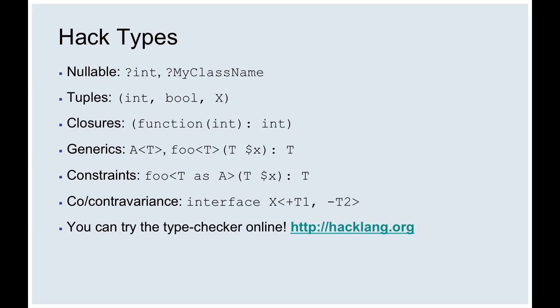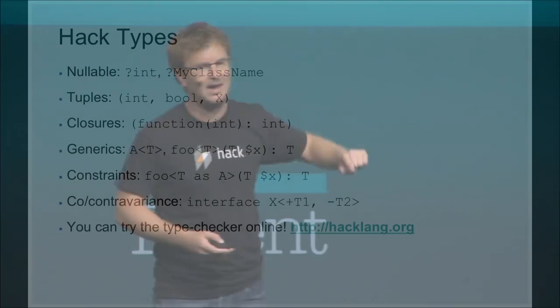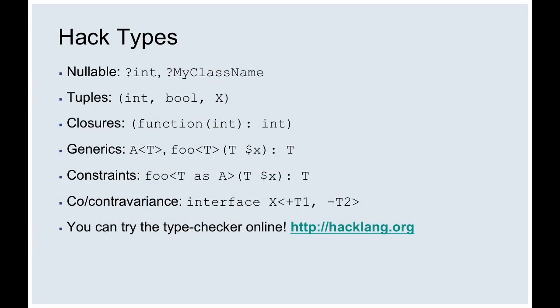So I've talked about three features: async/await, nullable, and XHP. These are three very important features, but there's a ton more. I can't show them all today, but you can play with them online or install the package. Some of it is actually pretty advanced — stuff you'd find in advanced programming languages, such as covariant and contravariant support. It's actually pretty rich and there's a lot you can do with it. Again, here's the link — hacklang.org — if you want to try this out without installing anything.